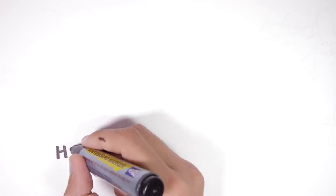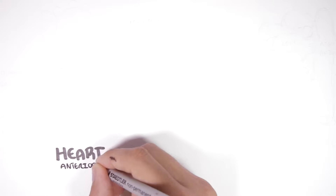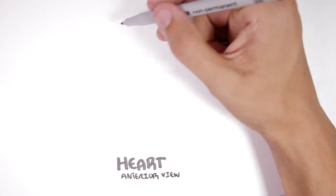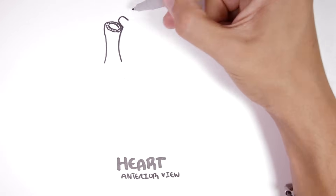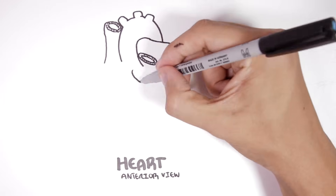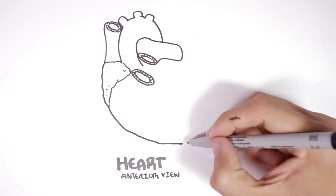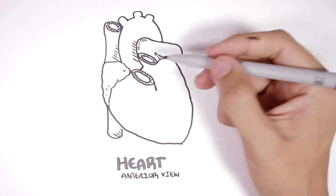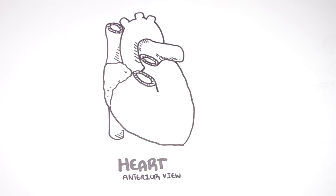The coronary blood supply is the circulation of blood in the blood vessels of the heart. You have coronary arteries and the veins. Let us look at the coronary arteries first. Coronary arteries supply blood to the heart muscles. We'll first look at the anterior view of the heart and look at the coronary arteries from there.